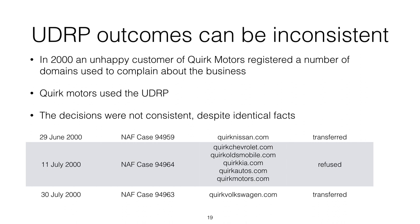Despite identical facts, the decisions for the domain names were inconsistent — some were transferred and some were not. On the 29th of June, Quark Nissan was transferred and taken away from the person who had registered it. On the 11th of July however, Quark Chevrolet, Quark Oldsmobile, Quark Kia, Quark Autos, and Quark Motors were not transferred. Then on the 30th of July, Quark Volkswagen was transferred. Each of these decisions were made on the same basic facts, suggesting that the rules were being interpreted slightly differently by different UDRP panelists.